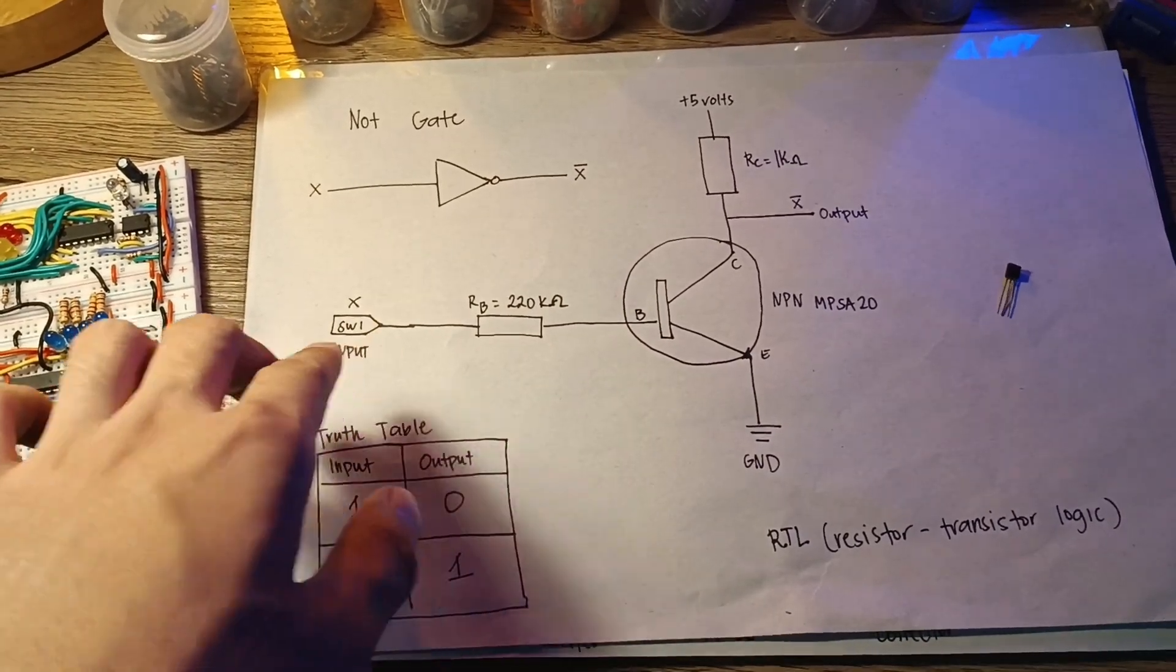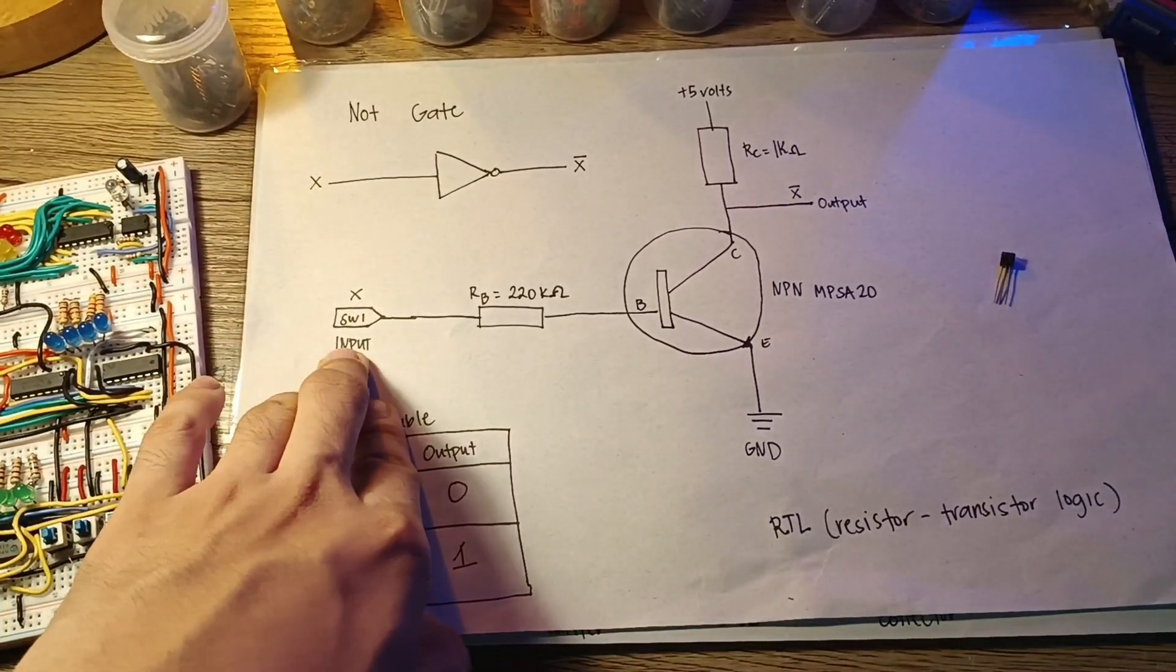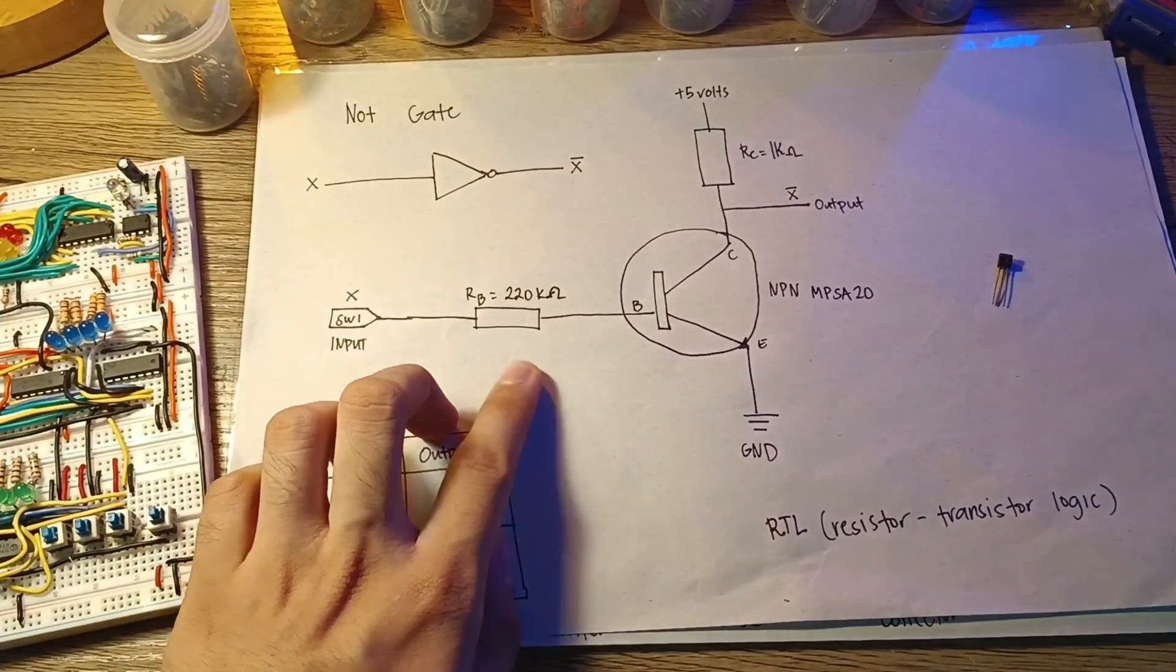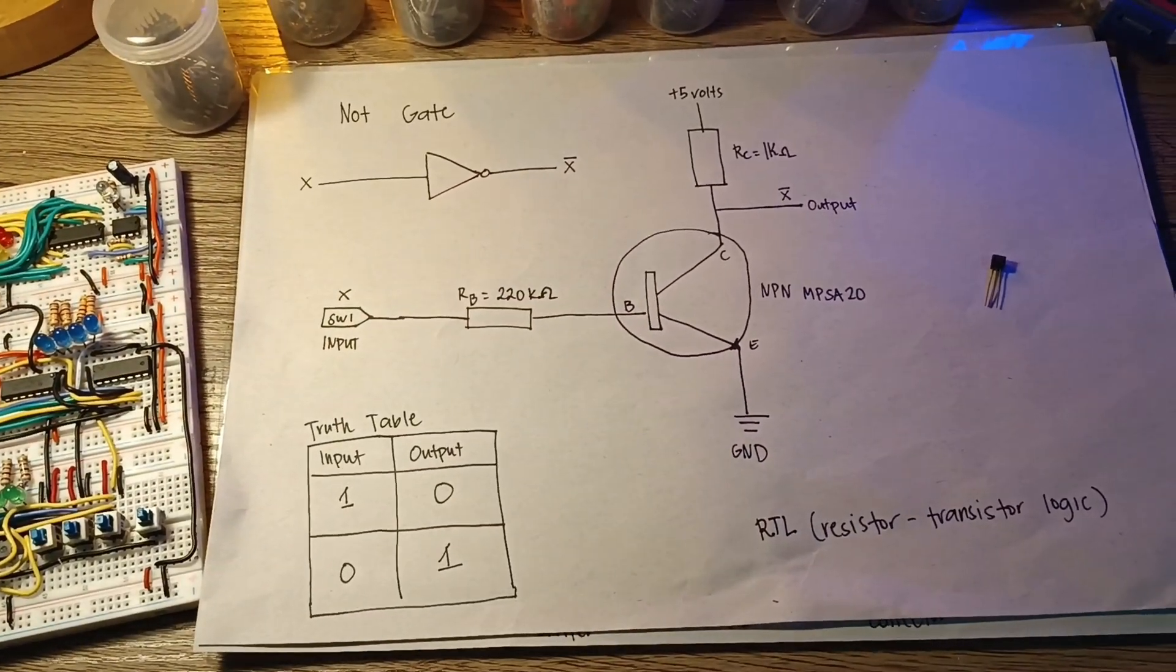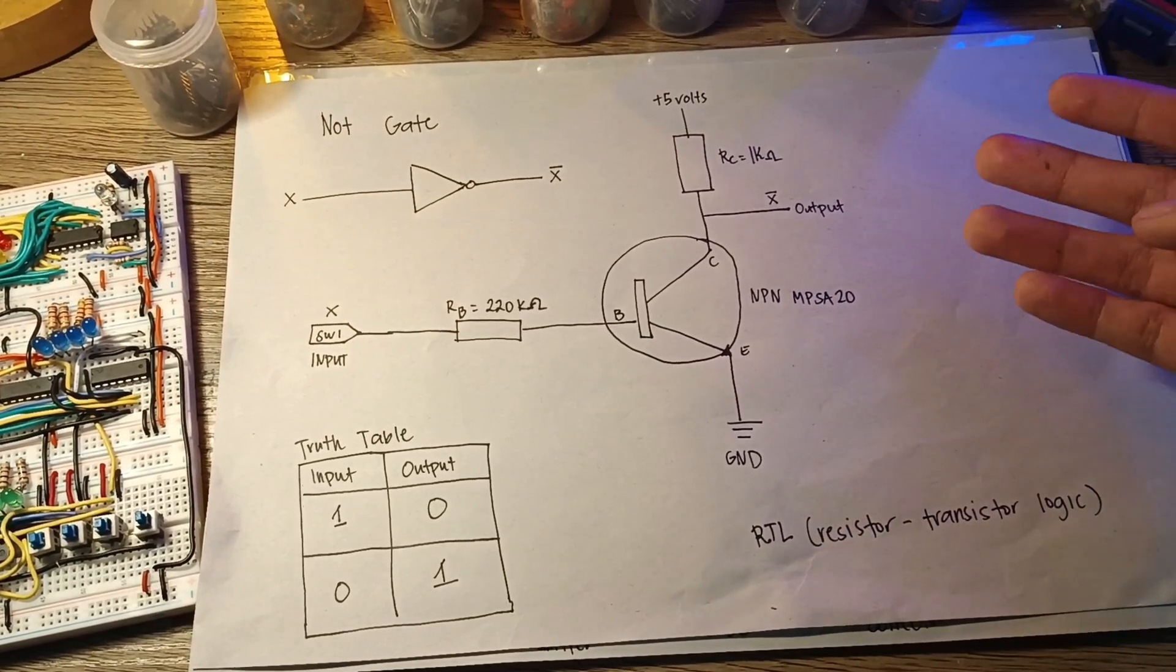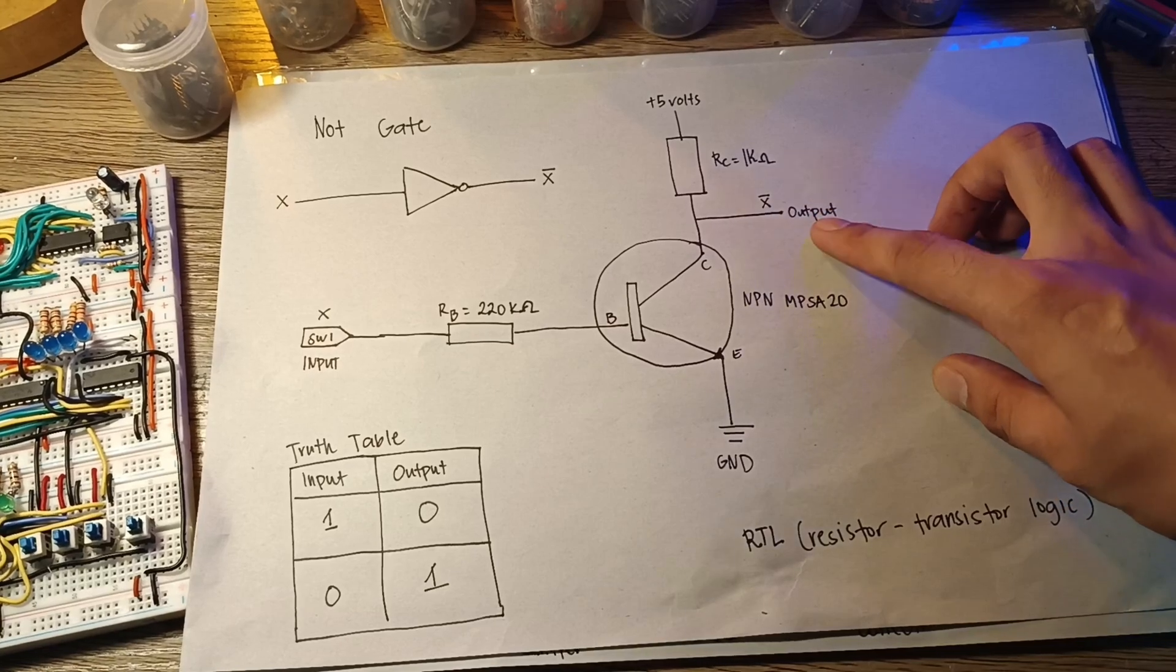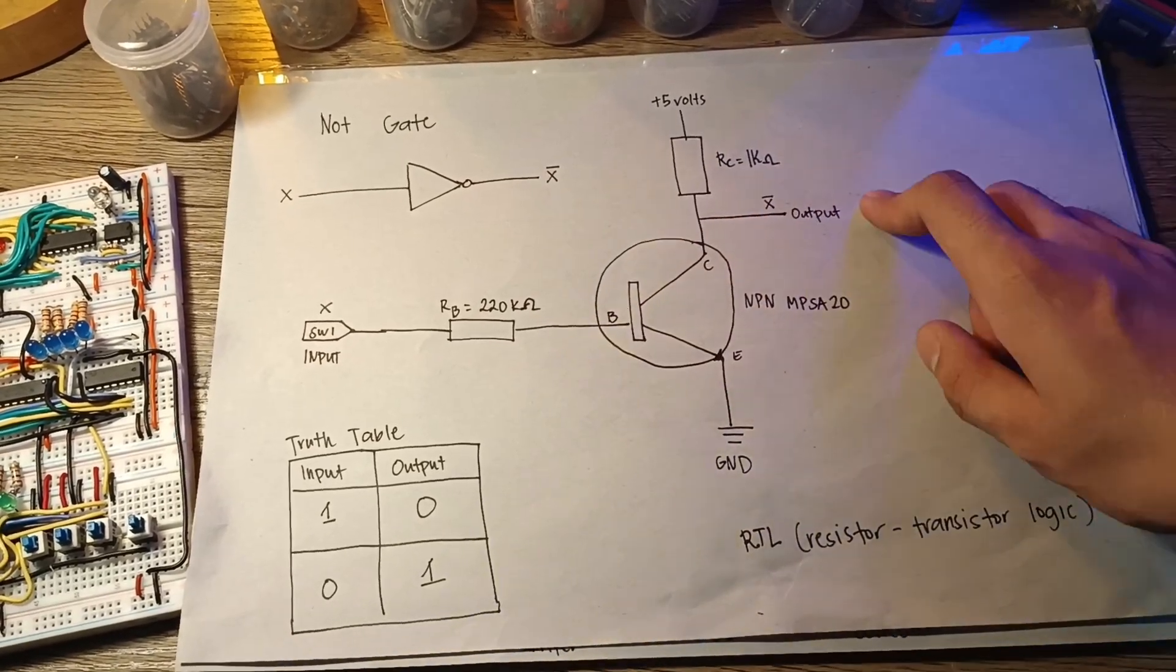Conversely, when the input signal is at high voltage or five volts, the transistor transitions from cutoff to active and then to saturation. Current will flow into the base, allowing the transistor to conduct at saturation. There is a low-resistant path between the collector and the emitter, causing the output voltage at the collector to drop to near zero volts. If we input a one, it will output a zero.